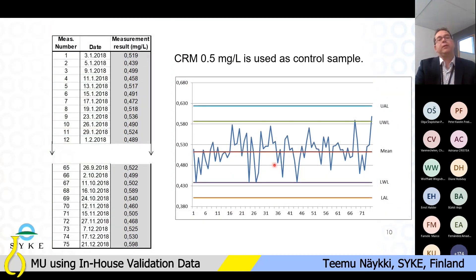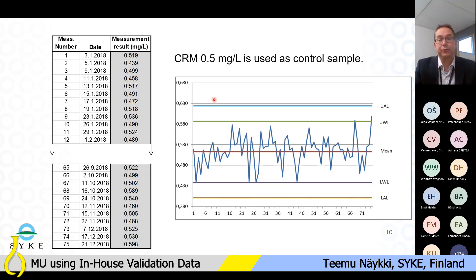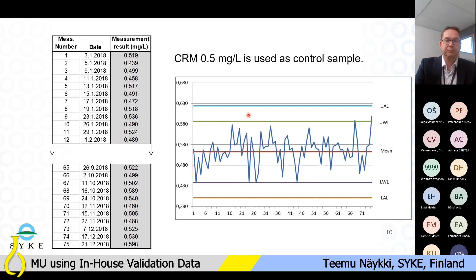The next step is to quantify the within-lab reproducibility using the same stable control sample that is measured over several days by different analysts, different calibrations, and different reagent batches at your laboratory. In this example, a CRM certified reference material was used as a control sample, and 75 measurement results were collected during one year from the control X chart of the laboratory. The results are entered into the Muget software, which calculates the standard deviation, average concentration, and number of results.